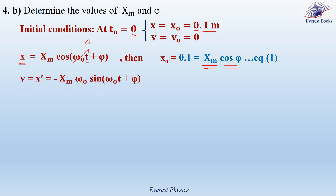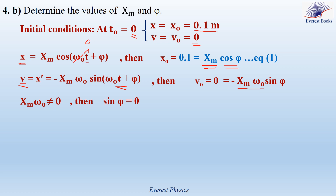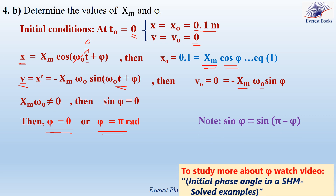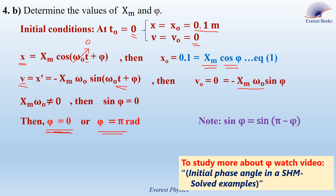For velocity: v equals x′ equals minus xm ω₀ sine(ω₀t + φ). Substituting v equals 0 and t equals 0, we get 0 equals minus xm ω₀ sine(φ). Since xm ω₀ is not zero, we have sine(φ) equals 0. This gives φ equals 0 or φ equals π as possible values.